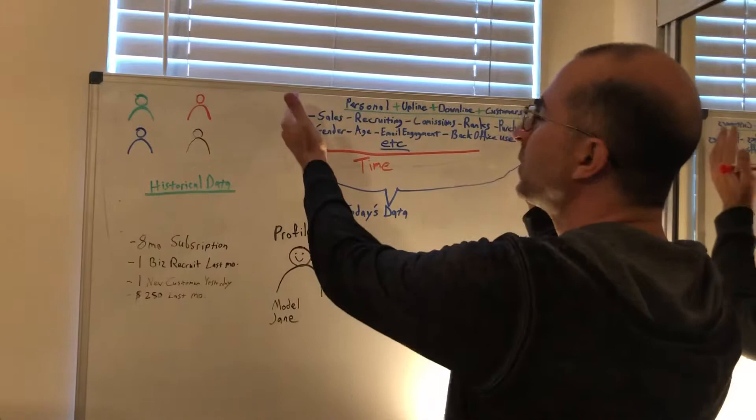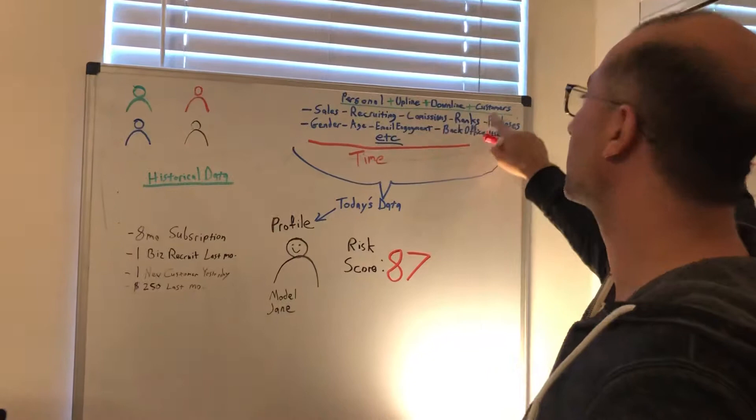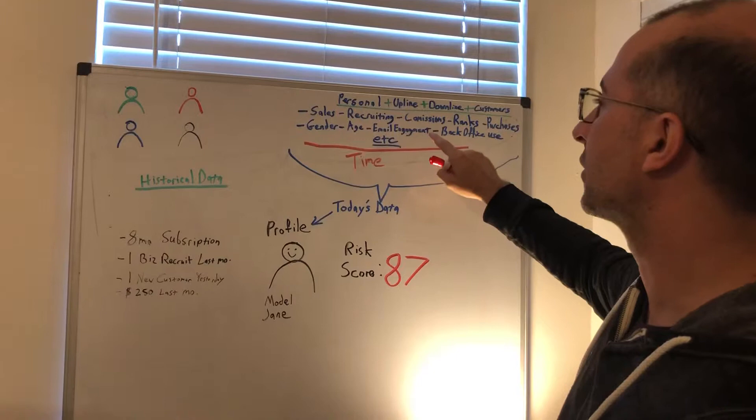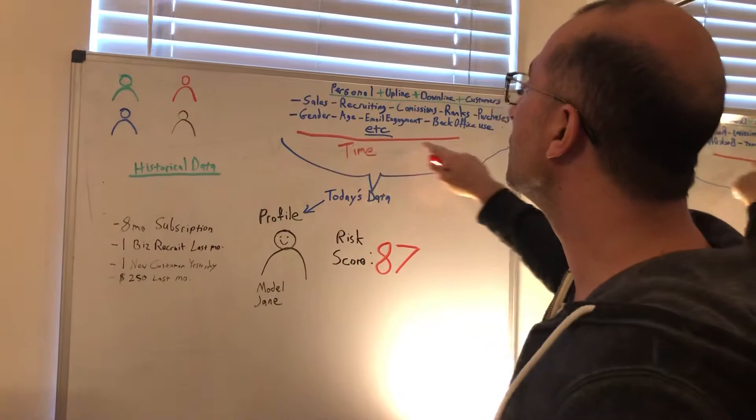We're going to start with today's data. We look at all these different things about not just Jane, but qualities about her upline, her downline, and her customers—like their sales, recruiting numbers, commissions, ranks, purchases, gender, age, engagement with your emails, back office use, and whatever else a customer can give us.